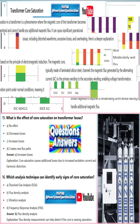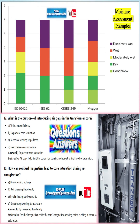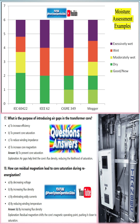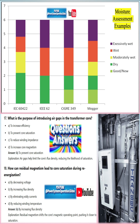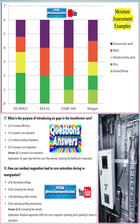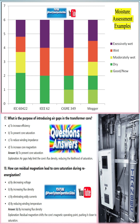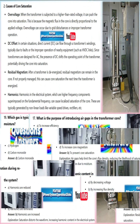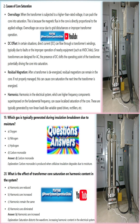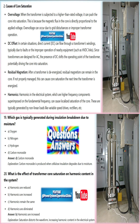This case study examines a power transformer in an industrial facility that supports essential operations. The transformer, which had been operational for several years, was located in a high humidity area near a water source. The purpose of this study is to highlight the importance of effective transformer maintenance.